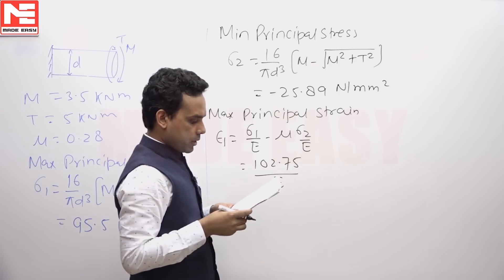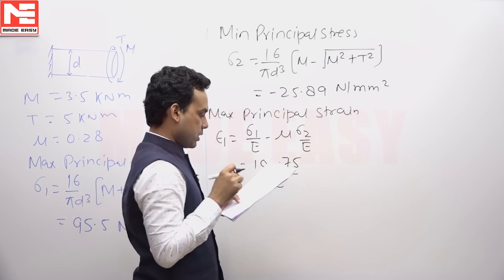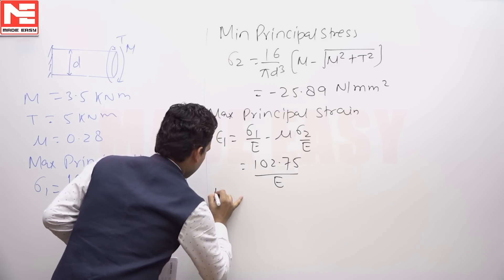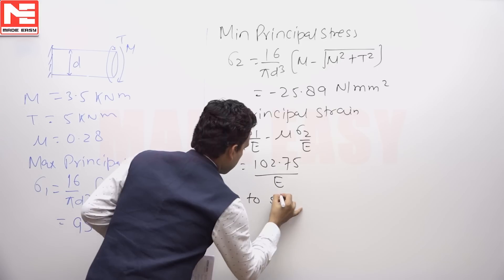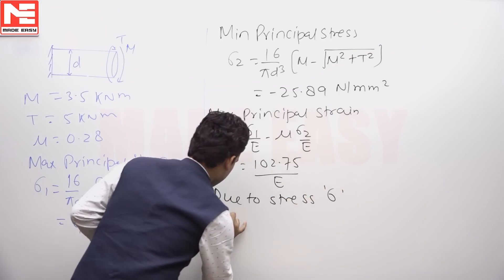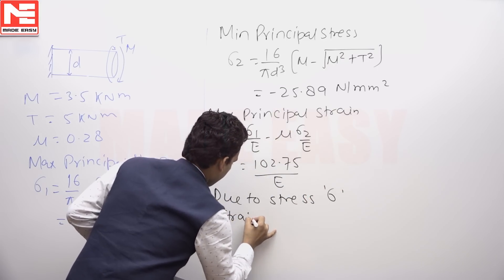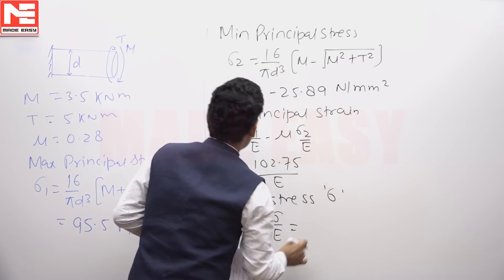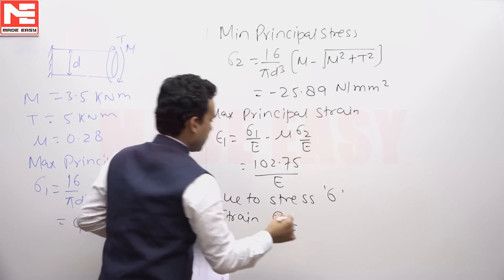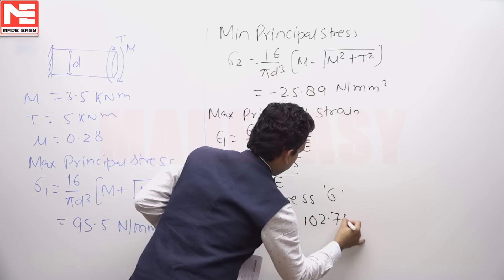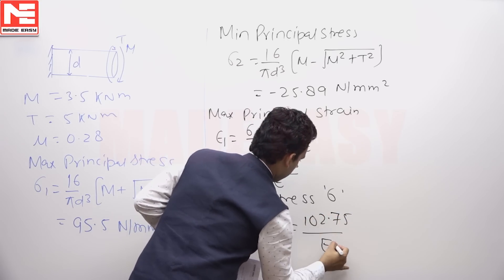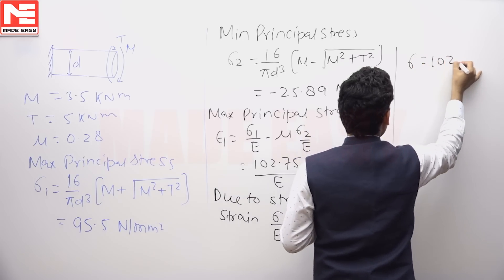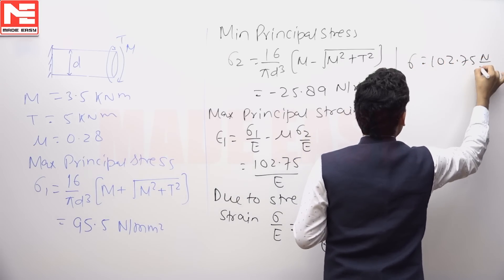Now find the stress sigma that produces the same strain. If stress sigma produces strain σ/E, this should equal the strain from the moment and torque, which is 102.75/E. Therefore, the equivalent stress is 102.75 N/mm².